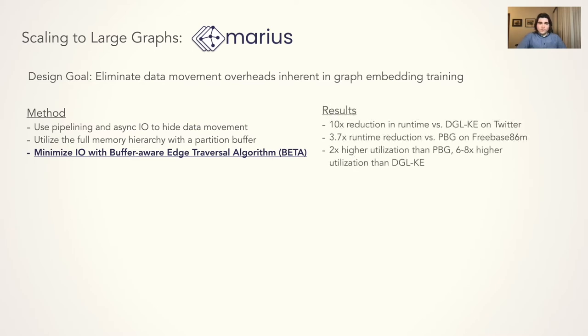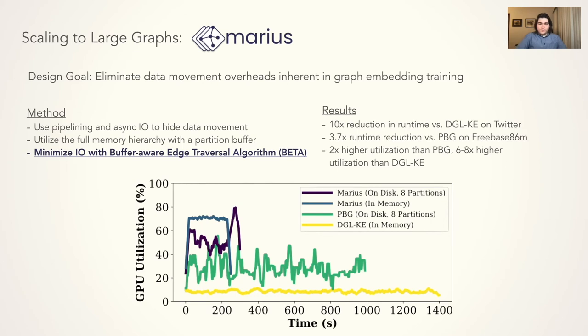From these contributions, we alleviate the data movement bottlenecks that affect existing systems, allowing us to train 10x faster than DGLKE on the Billion Edge Twitter Graph and 3.7x faster than PyTorch Big Graph on Freebase86M. The runtime improvements can be directly inferred from the plot below, which shows the GPU utilization of the systems during a single epoch of training. We see that MARIUS has a 2x utilization improvement over PyTorch Big Graph, and a 6-8x improvement over DGLKE.